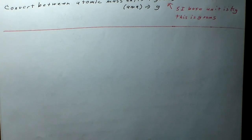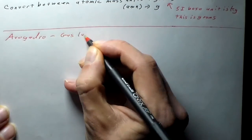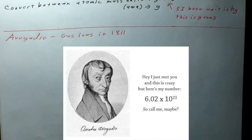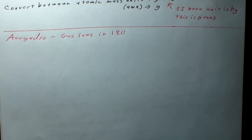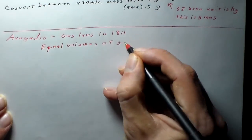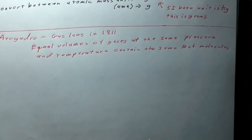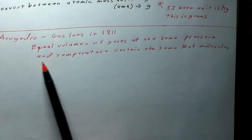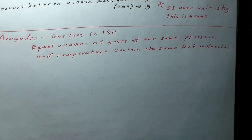Why is this called Avogadro's number? In 1811, while formulating the gas laws, Avogadro came up with a hypothesis very important for figuring out those laws: equal volumes of gases at the same pressure and temperature contain the same number of molecules.